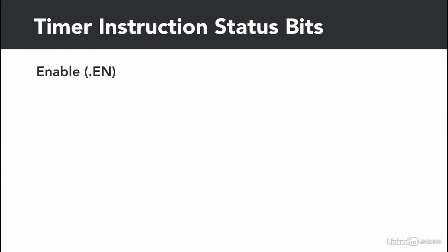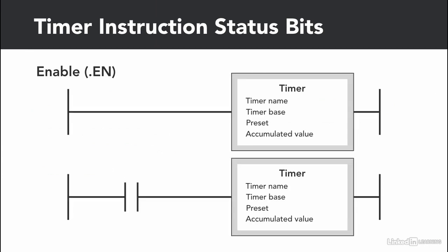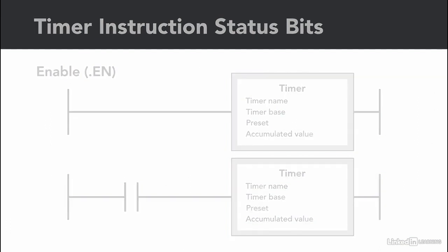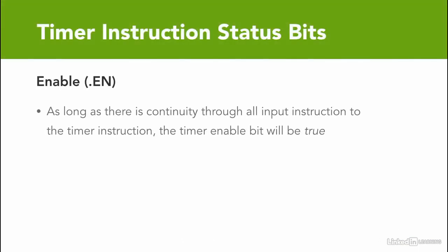Whenever the rung is true, the timer enable is true anytime the timer instruction is true. So as long as the input is true, the timer instruction is considered enabled. In other words, as long as there is continuity through all input instructions to the timer instruction, no matter what the relationship between the preset and accumulated value, the timer enable bit will be set — even if the timer is done timing or the accumulator equals the preset or zero.